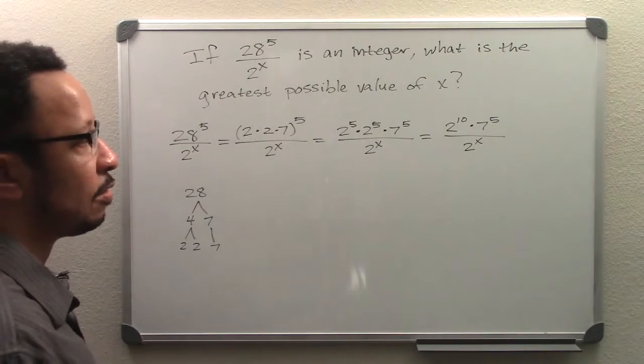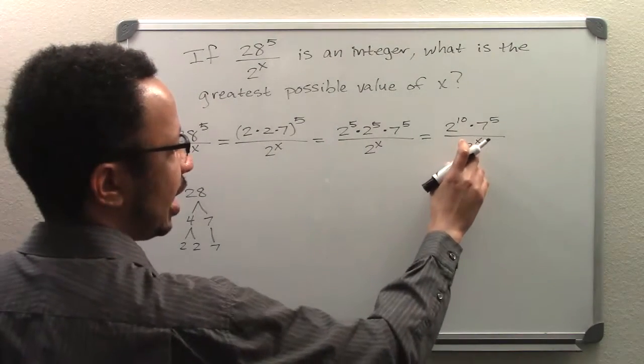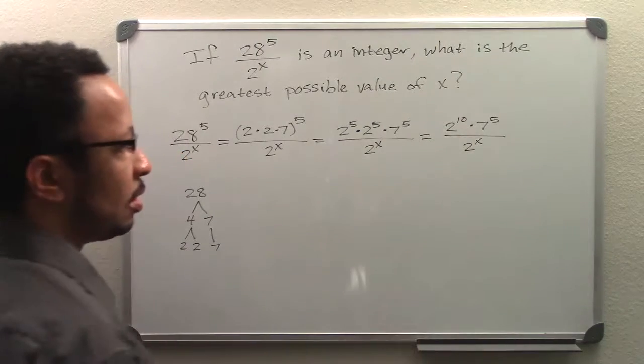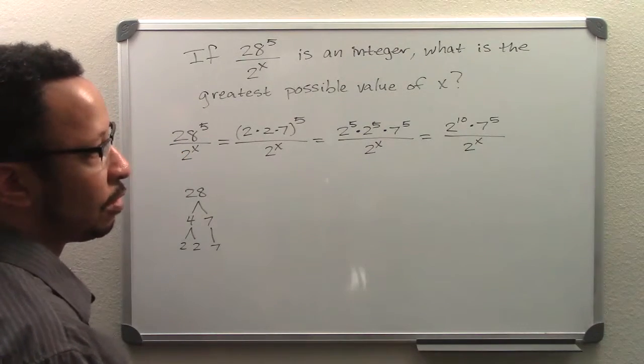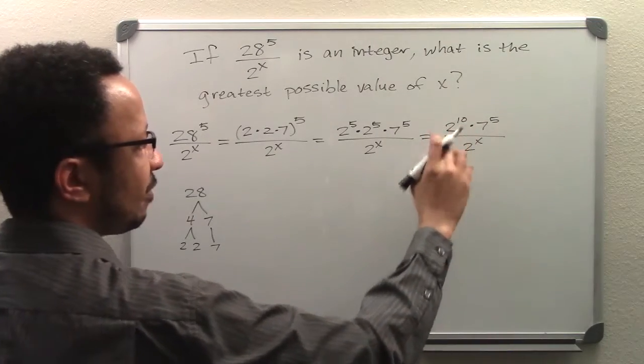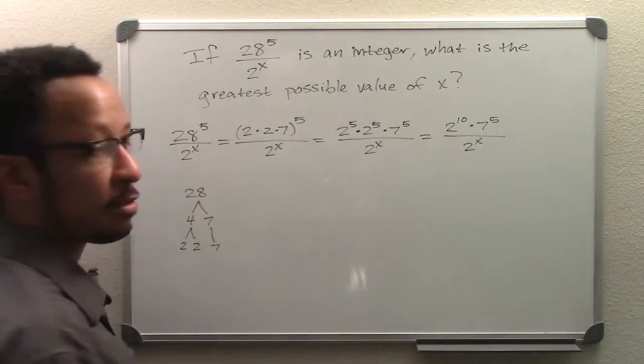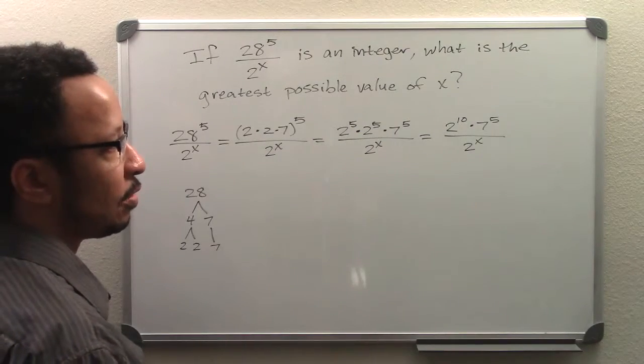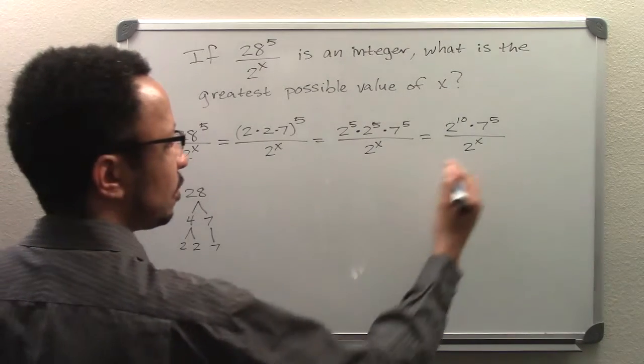If we want this to remain an integer, if we had 2 to the 1st or 2nd or 3rd or 4th or 5th, we would still have a number left up here that still would make this fraction an integer, all the way up until we get to 2 to the 10th.